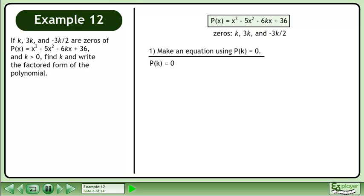Let's begin with step 1. Since k is a zero of the polynomial, we know that P(k) = 0. Replace x with k. Simplify. Collect like terms to get the equation k³ - 11k² + 36 = 0.